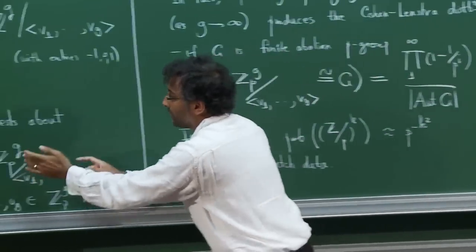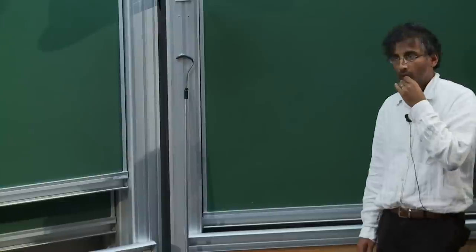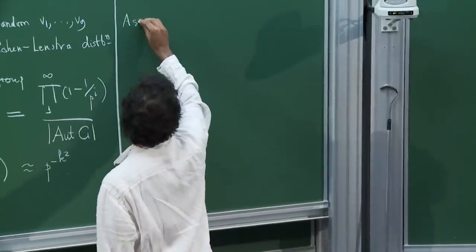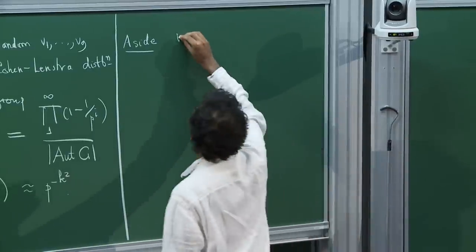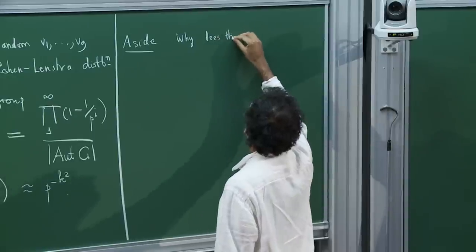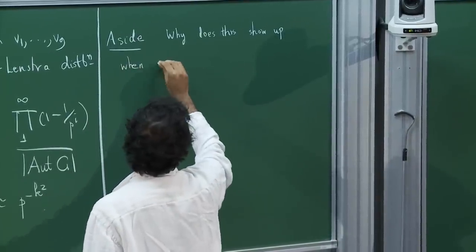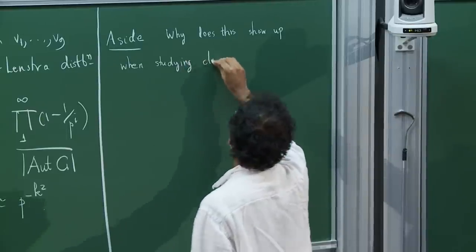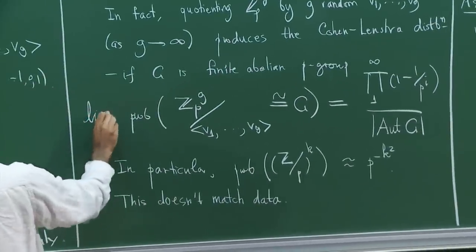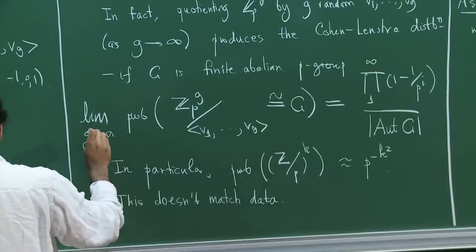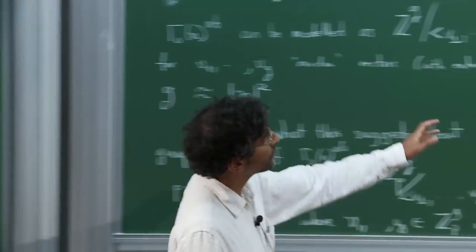Let's say vi are chosen uniformly with respect to Haar measure. This is a slight aside, but worth making since we're also talking about Cohen-Lenstra heuristics in another course. Why should this show up when you study class groups? One thing to note: this equality here holds in the limit as g goes to infinity, but the convergence is extremely fast.